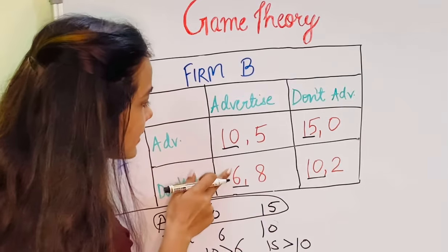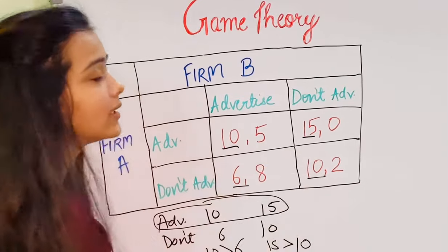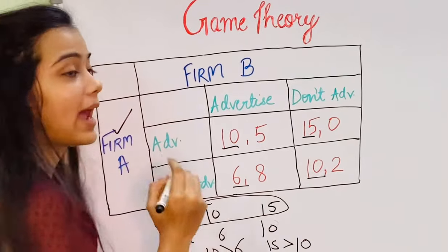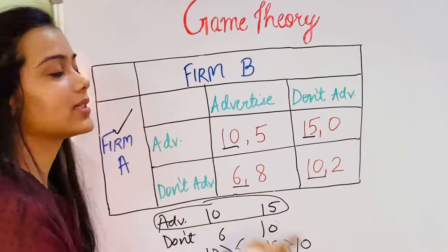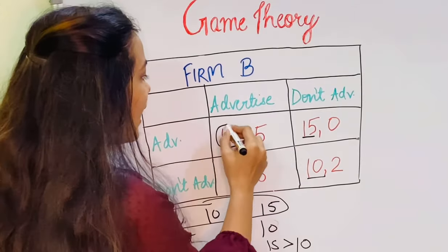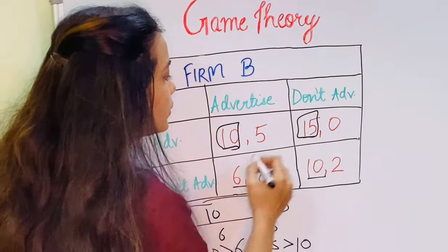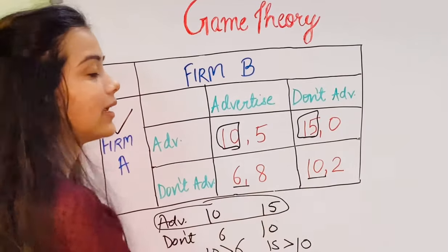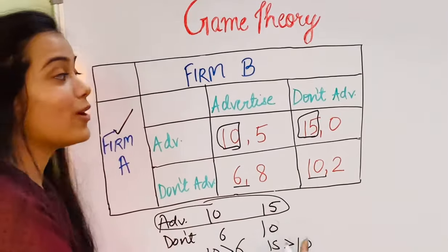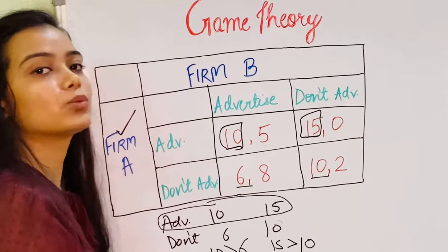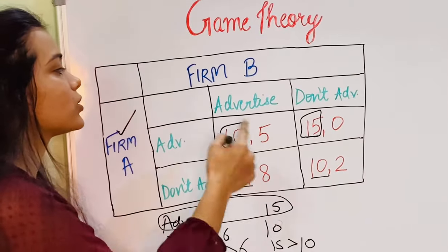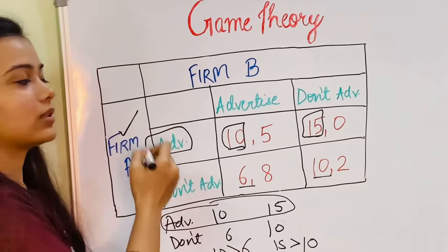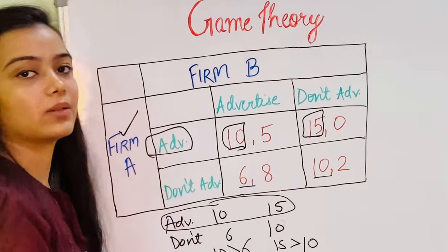Since both payoffs from advertising — 10 and 15 — are greater than the payoffs from not advertising — 6 and 10 — respectively, Firm A has a dominant strategy in advertising. No matter whatever Firm B chooses, Firm A will always choose to advertise.